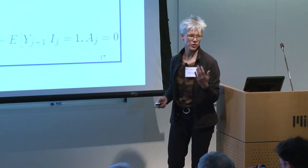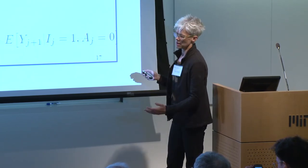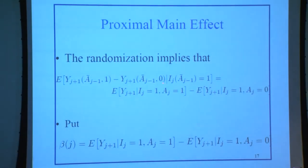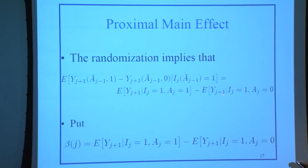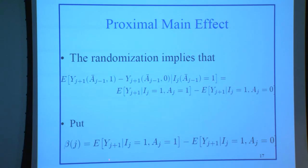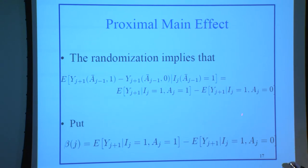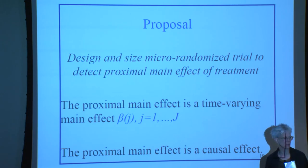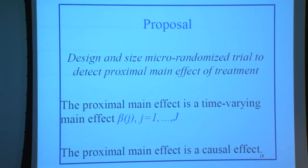Randomization and other technical assumptions imply we can rewrite our estimand — expressed in potential outcomes — in terms of observable data. This is the usual expectation you can calculate from your data, which I'll call beta on the next slide. It's a causal effect among the available people: among those available, 40% get a message and 60% do not, and that is randomized. We proposed designing and sizing micro-randomized trials to detect this proximal effect.